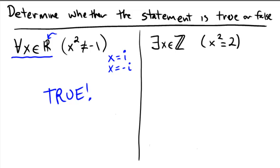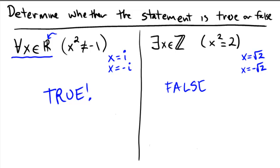How about on the right? It says backwards E, and that stands for 'there exists.' So is there an x in ℤ, the integers, such that x squared equals 2? Do you happen to know any numbers whose squares equal 2? There's one called √2 and one called -√2. However, √2 and -√2 are not integers. So does there exist an integer that makes this true? We found two numbers that make it true, but those two numbers are not integers. Therefore, this statement is a false statement.